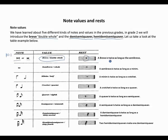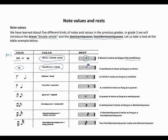A breve is twice as long as a semi-brief. The semi-brief has an oval shape and is also known as a whole note. The semi-brief rest is a half space facing down.